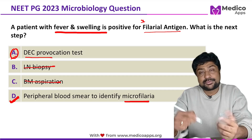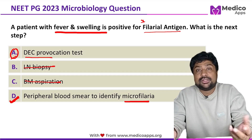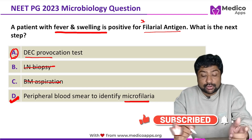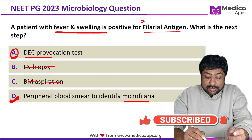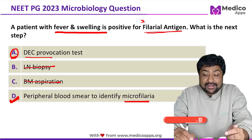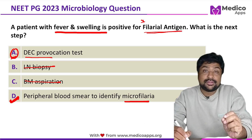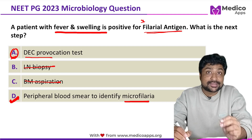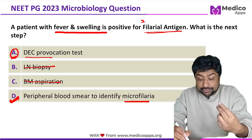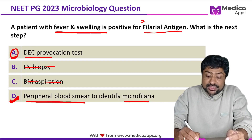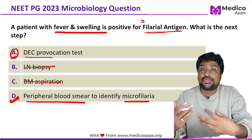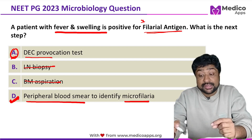Lymph node biopsy and bone marrow aspiration are completely out of question because microfilariae are not present there. Remember, filarial antigen is positive, which means you have to establish the diagnosis of filariasis and demonstrate microfilariae. One of the easiest ways is peripheral smear, especially towards night when you can find microfilariae.